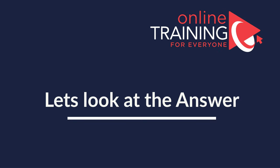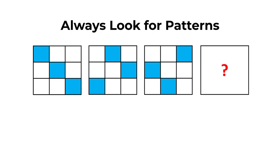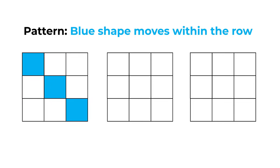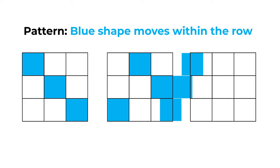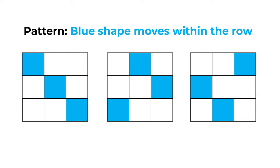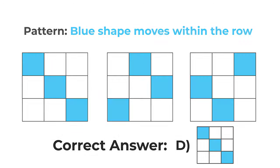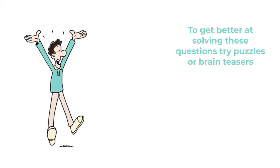Look for patterns — determining the pattern is key. In this problem, the blue shape moves within the row of the larger shape from left to right one step at a time. Once the blue shape reaches the end of the row on the right, it reappears on the left. So the correct answer is choice D.